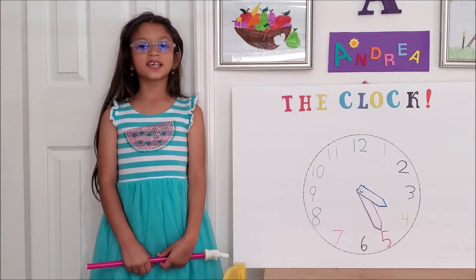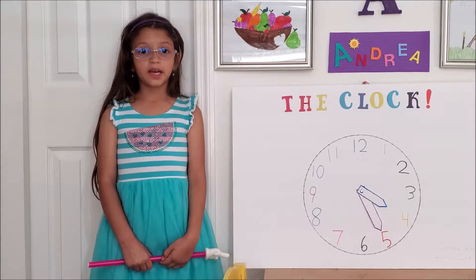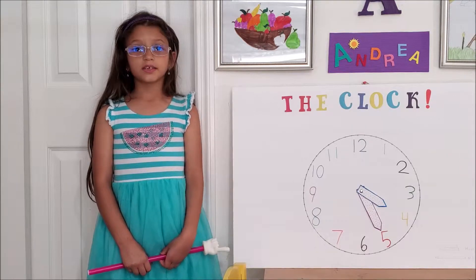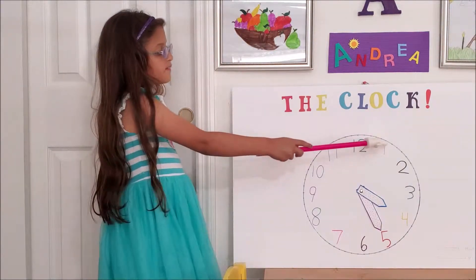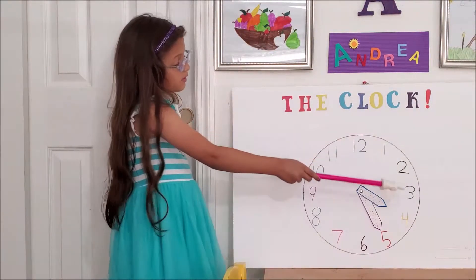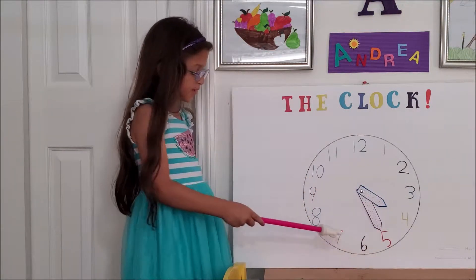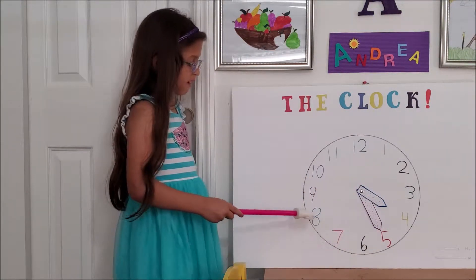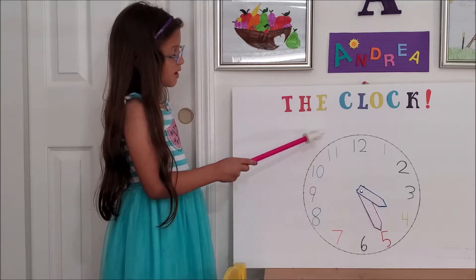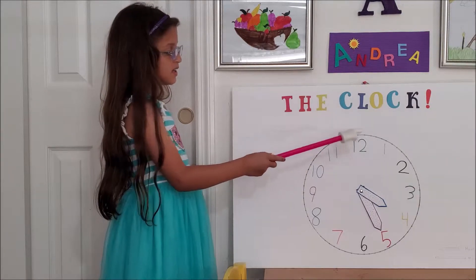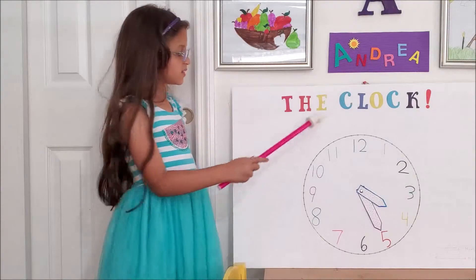An easier way to count the minutes on an analog clock is to count them by fives: 5, 10, 15, 20, 25, 30, 35, 40, 45, 50, 55, and 60 — or zero zero.